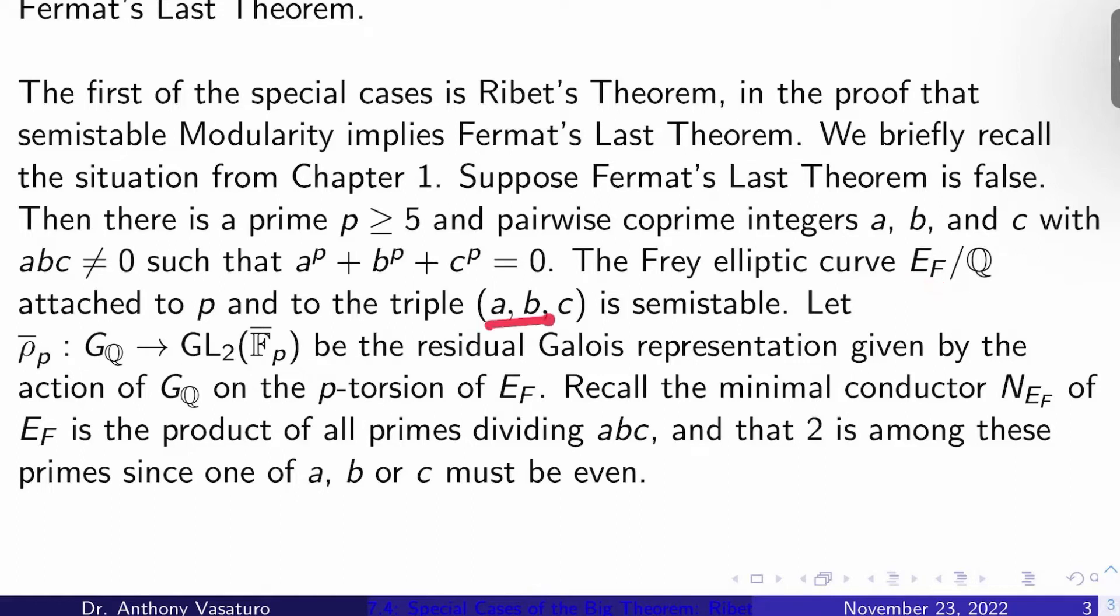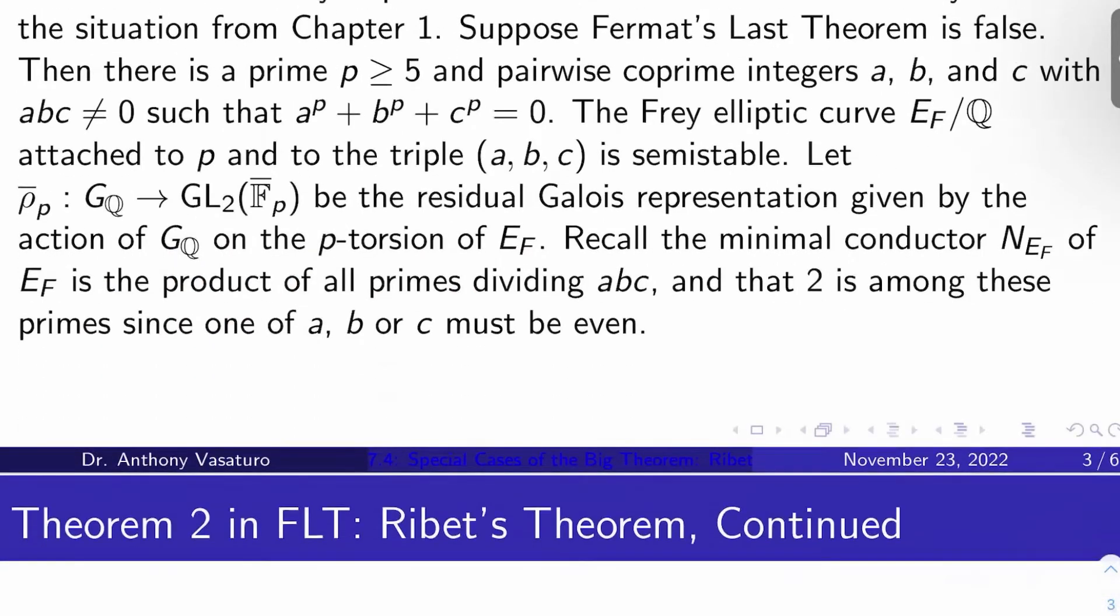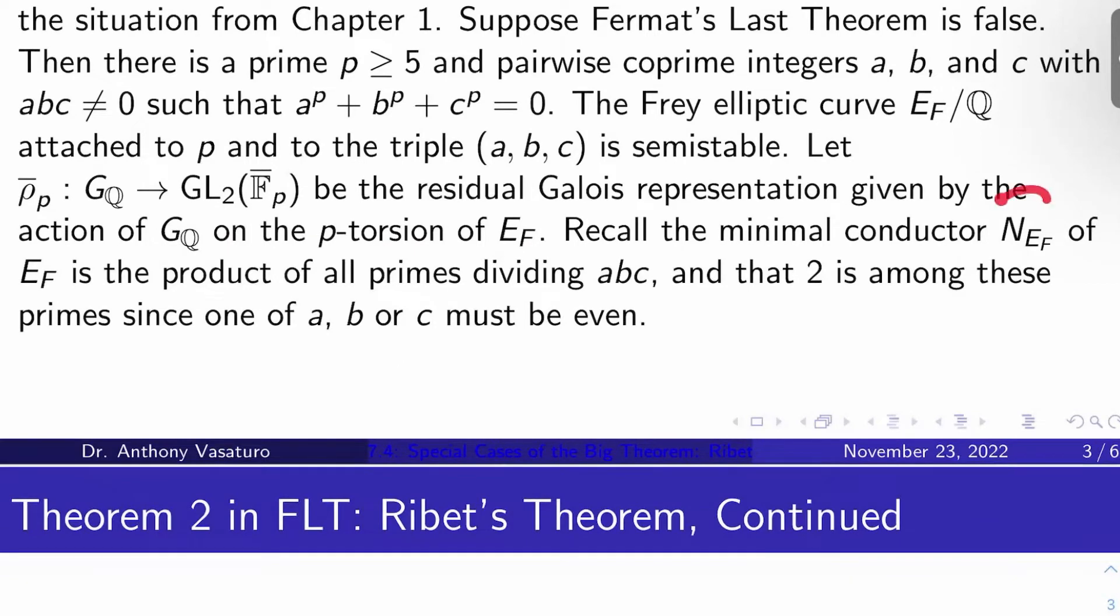The Frey elliptic curve E_F attached to p and to the triple (a,b,c) is a semi-stable elliptic curve. Let ρ̄_p from G_Q to GL_2 of F_p_bar be the residual mod p Galois representation given by the action of the Galois group of Q on the p-torsion of this Frey curve. Recall that the minimal conductor N_{E_F} of the Frey curve E_F is just the product of all the primes dividing abc and that 2 is among these because you can assume that one of a, b or c is even.